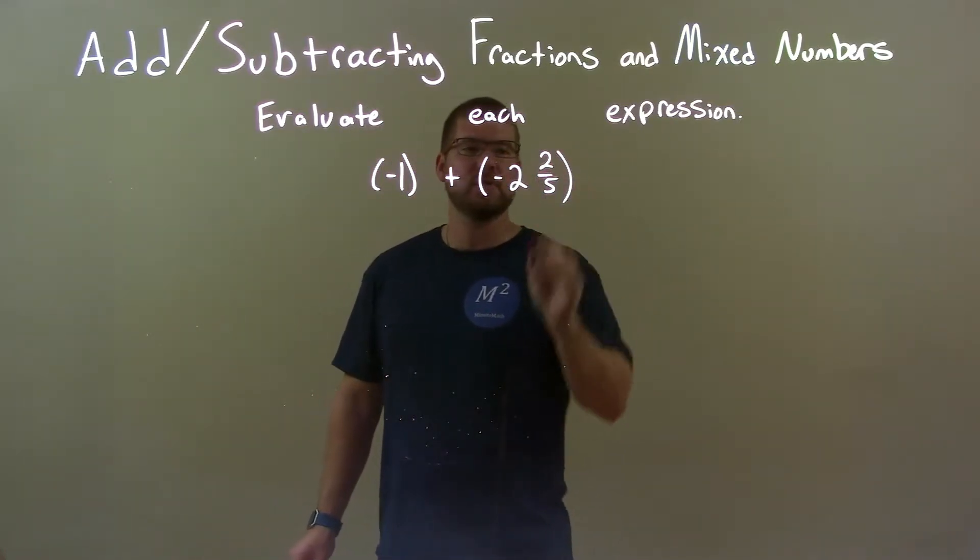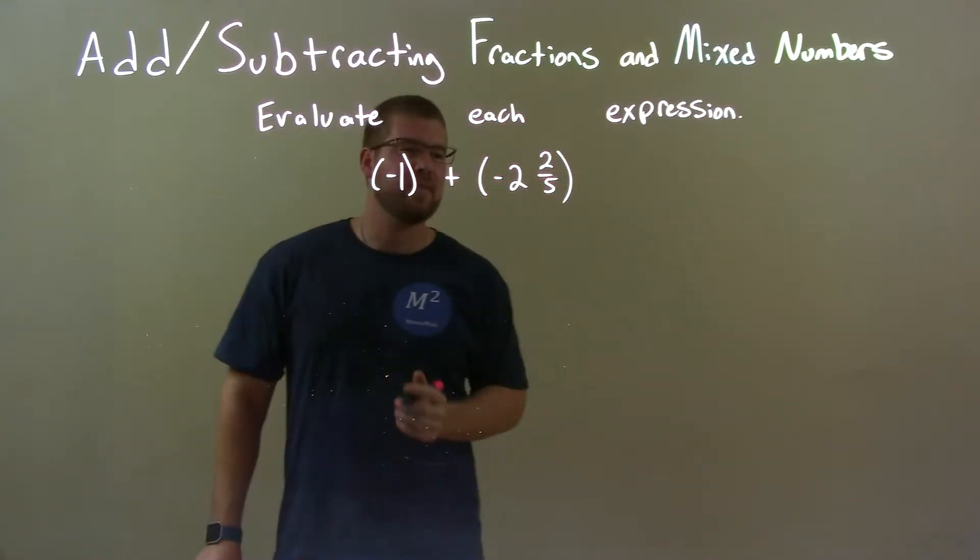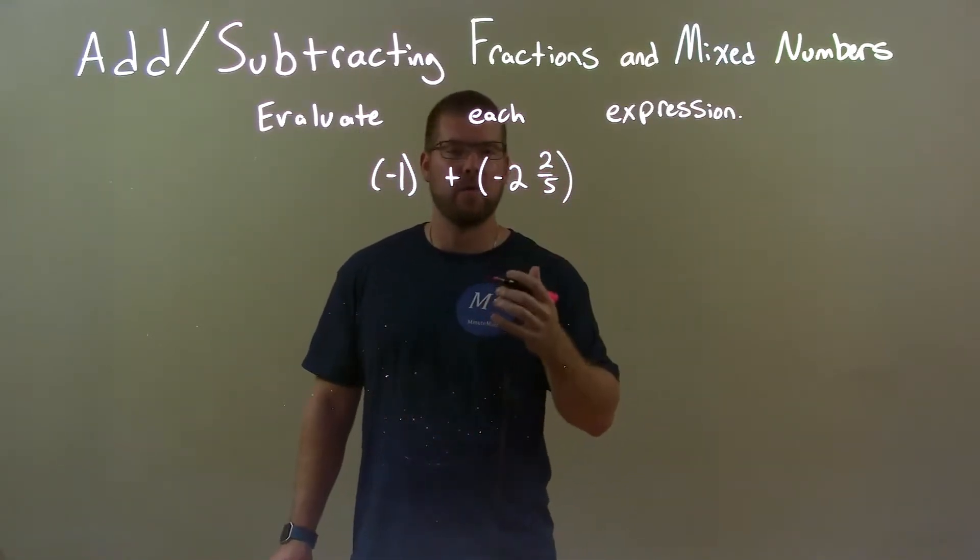And so we have negative 2 and 2 fifths, okay? So, that's almost like negative 2 plus 2 fifths, right? That's really kind of what it is.